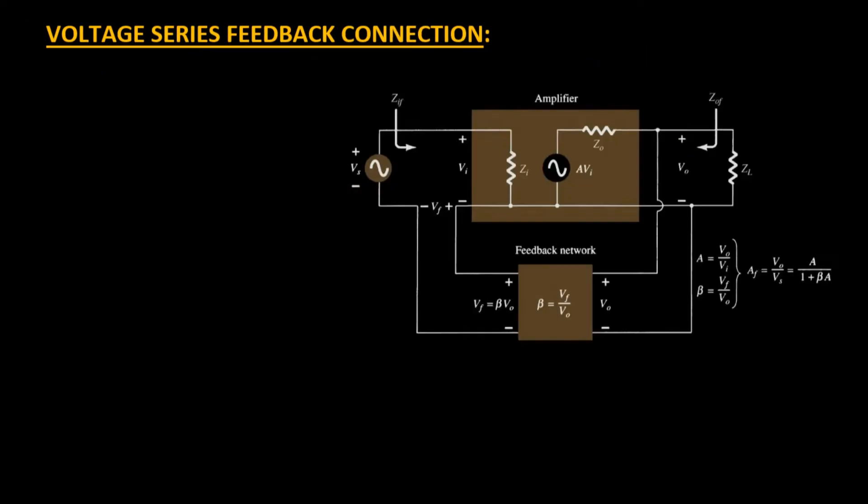Let's start with the gain calculation. If we haven't provided any feedback path, then Vf equals zero. The gain of this amplifier is equal to A. This gain will be simply V0 over Vs, where V0 is the output potential and Vs is the input potential supplied. That equals V0 over Vi, where Vi is the input potential at the transistor.